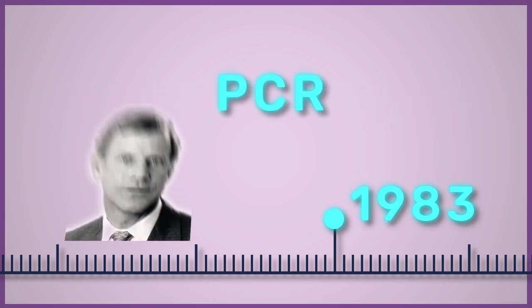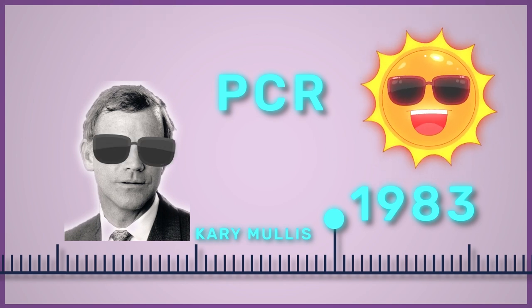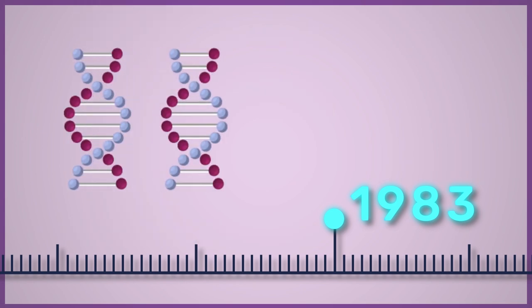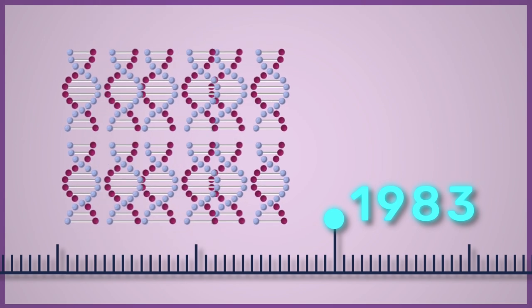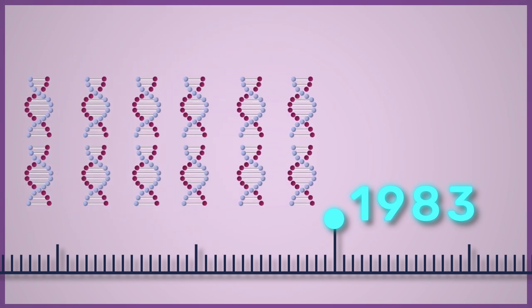A few years on, in 1983, a technique called Polymerase Chain Reaction, or PCR, was developed by Carey Mullis at Cetus Corporation in sunny California. PCR was a huge step forward, allowing a DNA sample to be amplified by several orders of magnitude, and this technique is still widely used today.